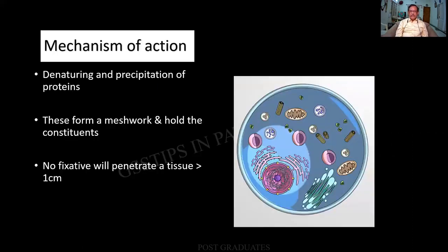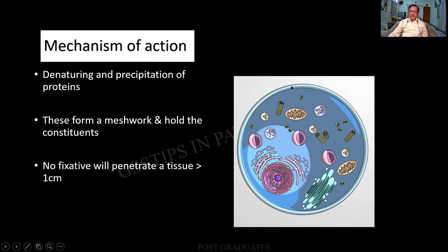What is the mechanism of action of any fixative? Denaturation of proteins is prevented and there is precipitation. As a result of this precipitation, they form a kind of meshwork that holds the other constituents in place. There are various components — organelles, cytoplasm, nucleus — so we have fixatives for different kinds: cellular fixative, cytoplasmic fixative, nuclear fixative. Beyond that, there is also a cell membrane having receptors for special stains as well as immunohistochemistry. Unless the tissue is well preserved, all subsequent stains will be defective or futile.